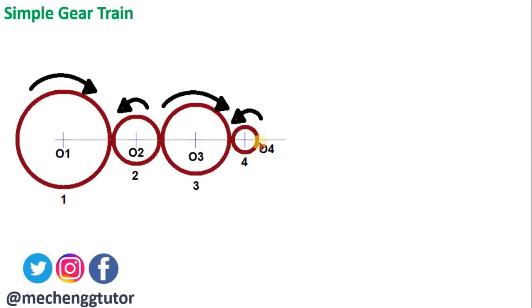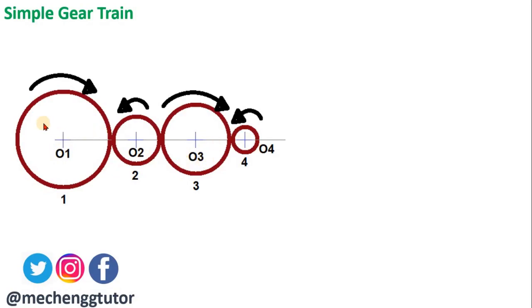In the simple gear train, there is only one gear on each shaft. As shown in the figure, O1, O2, O3, and O4 are four different shafts whose axes are perpendicular to the screen. This arrangement — one gear on each shaft — is called a simple gear train. Gear 1 is the driver gear connected to an external power source. It drives gear 2, which causes gear 3 to rotate, which in turn rotates gear 4 — transmitting motion from shaft one to shaft four.